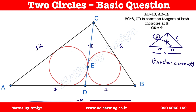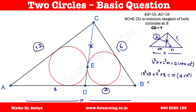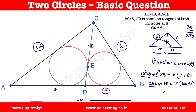Applying Stewart's Theorem: 12² × 2 + 6² × 8 = 10 × (M · N + X²). That gives 288 + 288 = 10 × (16 + X²), so 576 = 160 + 10X². Dividing: 57.6 = 16 + X², so X² = 41.6. Therefore X = √41.6, and this is our answer. You can also convert it to a fraction.